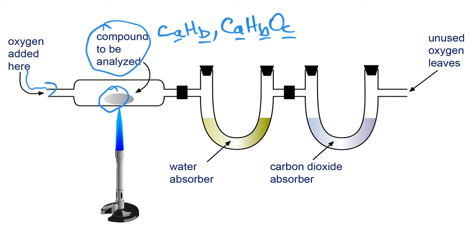The way it's set up is we got a series of tubes. The first tube has a material at the bottom that absorbs all the water that's produced, and the second tube has a material that absorbs all the carbon dioxide that's produced.